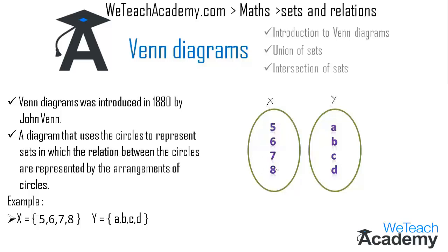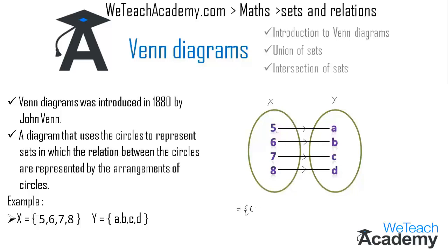Now let us map the first element of X with the first element of Y. Similarly we can map the other elements: 6 with b, 7 with c, and 8 with d. Now let us write the ordered pairs. Since 5 is mapped with a, we get the ordered pairs as (5,a), (6,b), (7,c), and (8,d).